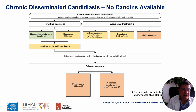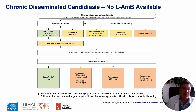Where echinocandins are not available, the first line must be liposomal amphotericin B, and alternatively we can use fluconazole. Where liposomal amphotericin B is not available, caspofungin is the best choice. Always, six months is the required treatment duration.